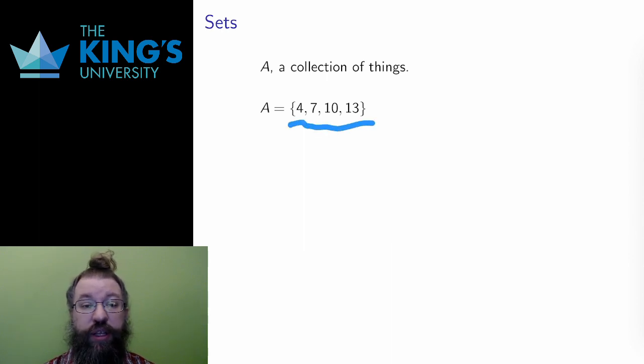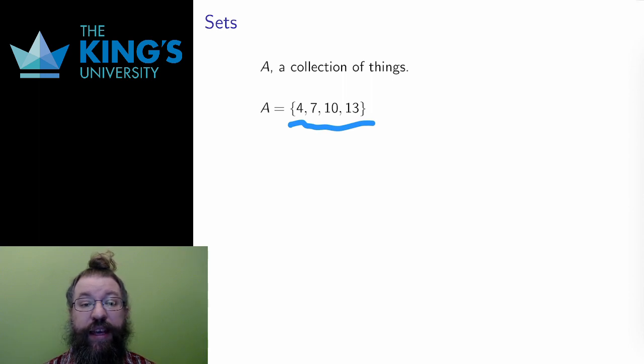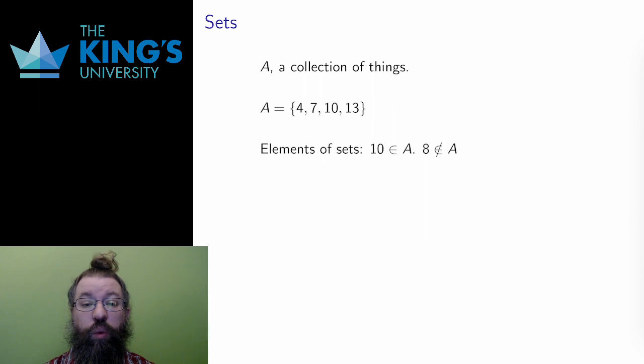Since it is a collection, I need to indicate when something is in a set, when it is an element of the set. I indicate elements using this E-like symbol. If I put a cross through it, I can indicate that something is not an element.